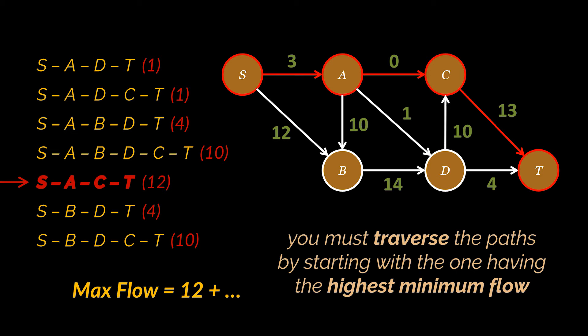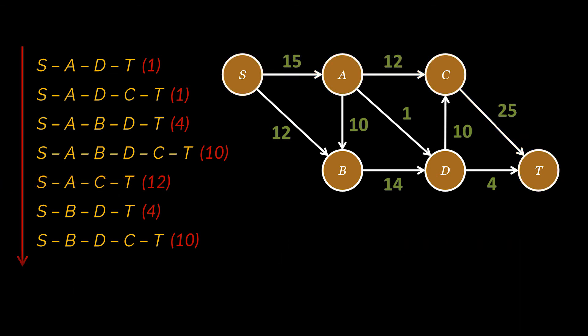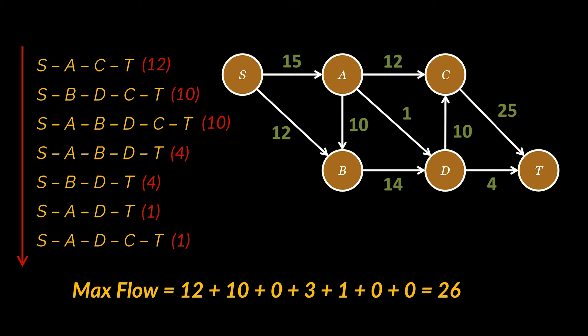Note that there's a catch. If you choose to apply this technique you must traverse the paths by starting with the one having the highest minimum flow. Let me explain. So here we have the possible paths. As you see, if we choose to apply this algorithm on the paths as they're currently displayed here, then the max flow we'll obtain is 18. However, if we choose to traverse by starting with the paths having the highest minimum flow, in this case 12, and go all the way to the smaller flows, we will obtain the expected max flow of 26.